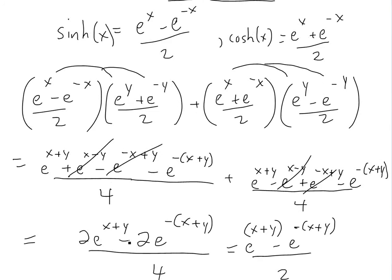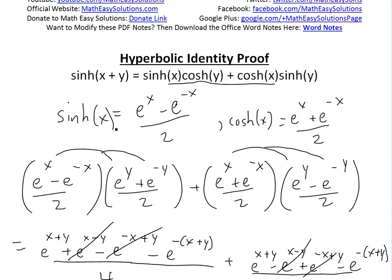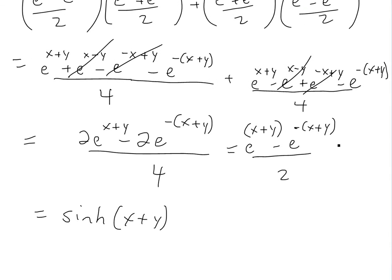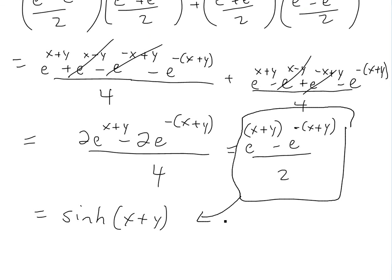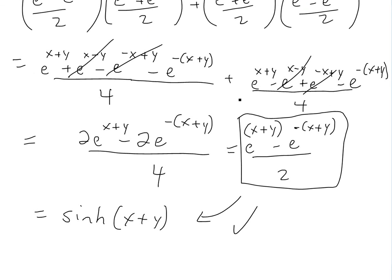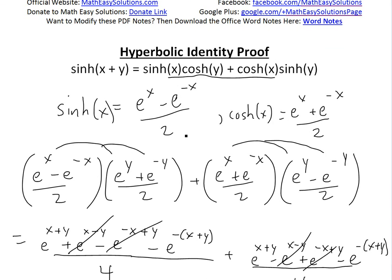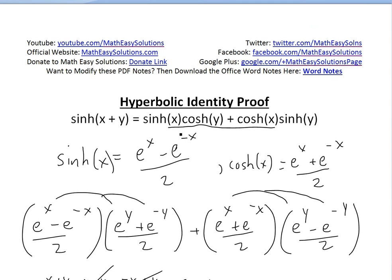This is exactly the definition of sinh of x plus y, since sinh of x is e to the x minus e to the negative x divided by 2 — just replacing x with x plus y. So this completes our proof. That's all for today. If you learned from this quick proof of the identity, thanks for watching. You can also download these notes from the Dropbox link below. Stay tuned for another math easy solution. Thank you so much for watching.